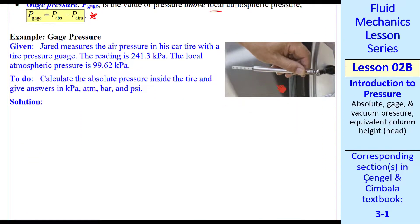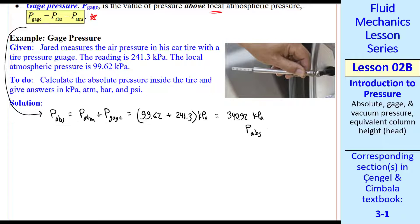Let's do a quick example problem. Jared measures the air pressure in his car tire with a pressure gauge. The reading is given. Local atmospheric pressure is also known. We want to calculate the absolute pressure inside the tire and give answers in several different units. We use this equation, solve for P abs. By the way, we chose to spell gauge as G-A-G-E, but an actual gauge that you measure with has a U in it. We plug in our atmospheric pressure and our gauge pressure. We get 340.92 kPa. We can justify four significant digits, so my first answer is 340.9 kPa.